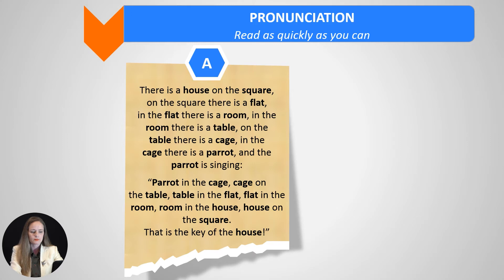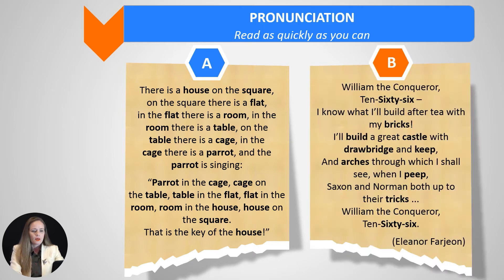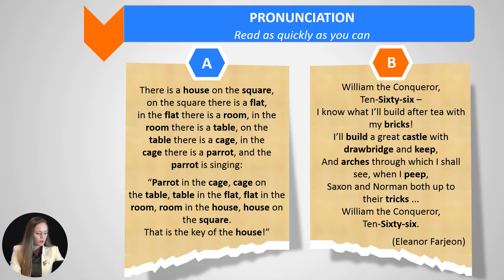And the next one is the following. Let's see some of the new words. Here we have the word brick, drawbridge — a drawbridge is a bascule bridge — a keep, a chance, cool, and arches. And the last word is peep.